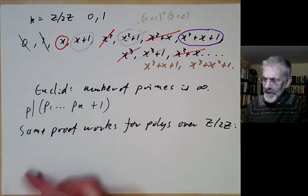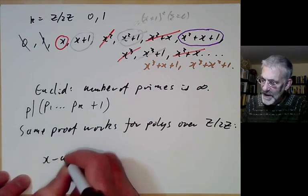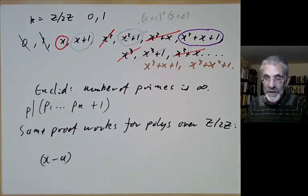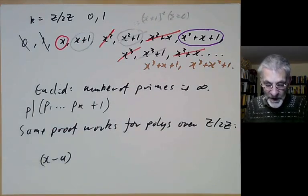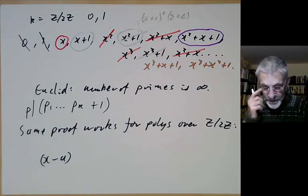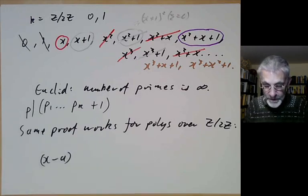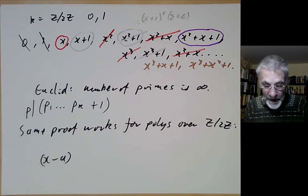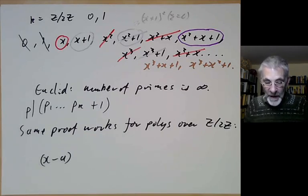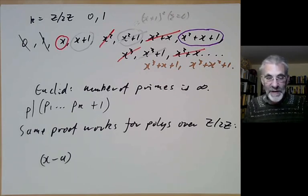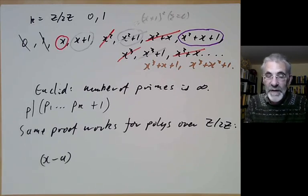If the field is infinite, this is trivial — just take polynomials x − a for a in the field. But if the field is finite, like F₂, it's not so obvious. So Euclid's proof of infinitely many primes applies here too. Next lecture, I'll talk more about properties of fields and their relation to number theory, in particular saying more about the finite fields.